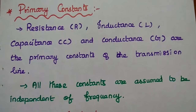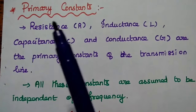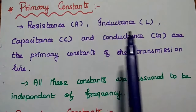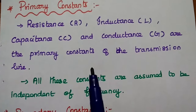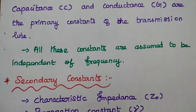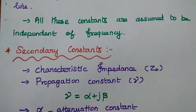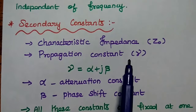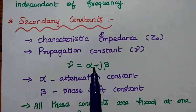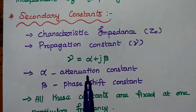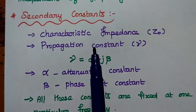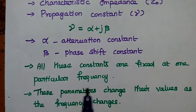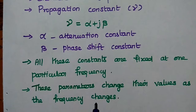Next are the primary constants and secondary constants of a transmission line. All four transmission line parameters — R, L, C, and G — are called the primary constants of the transmission line. These four constants are assumed to be independent of frequency. The secondary constants are: characteristics impedance Z-naught, and propagation constant, where the propagation constant equals alpha plus j-beta, with alpha being the attenuation constant and beta being the phase shift constant. All secondary constants are fixed at one particular frequency, and these parameters change their values as the frequency changes.